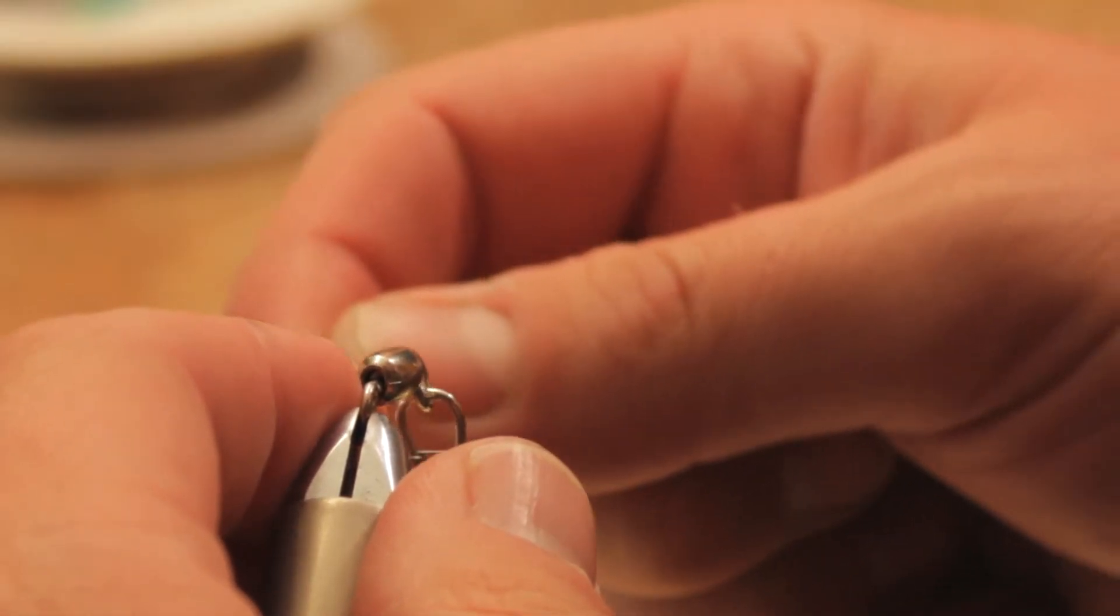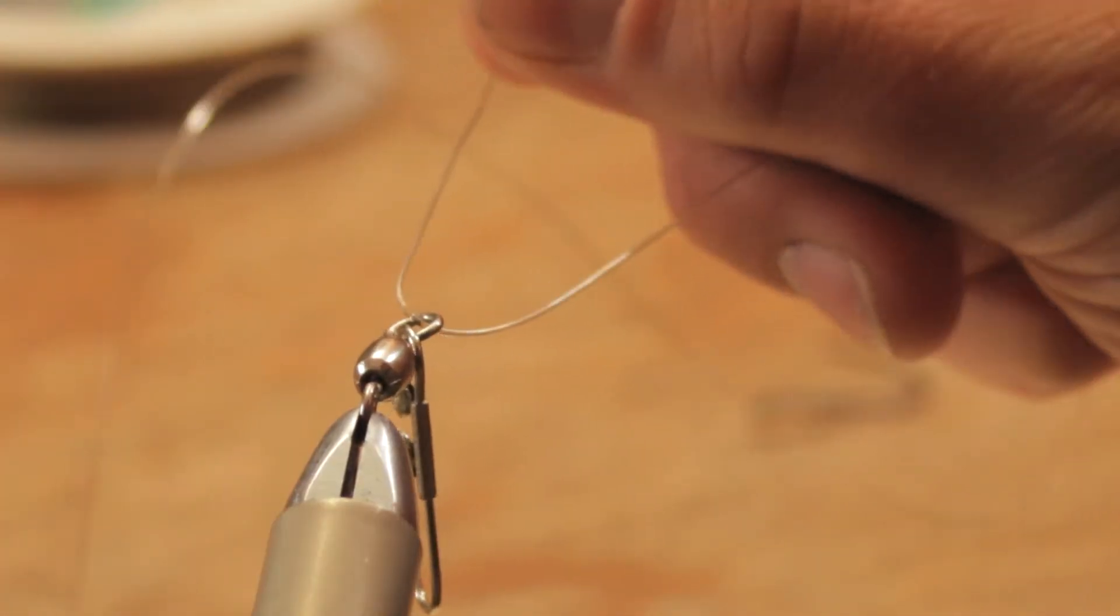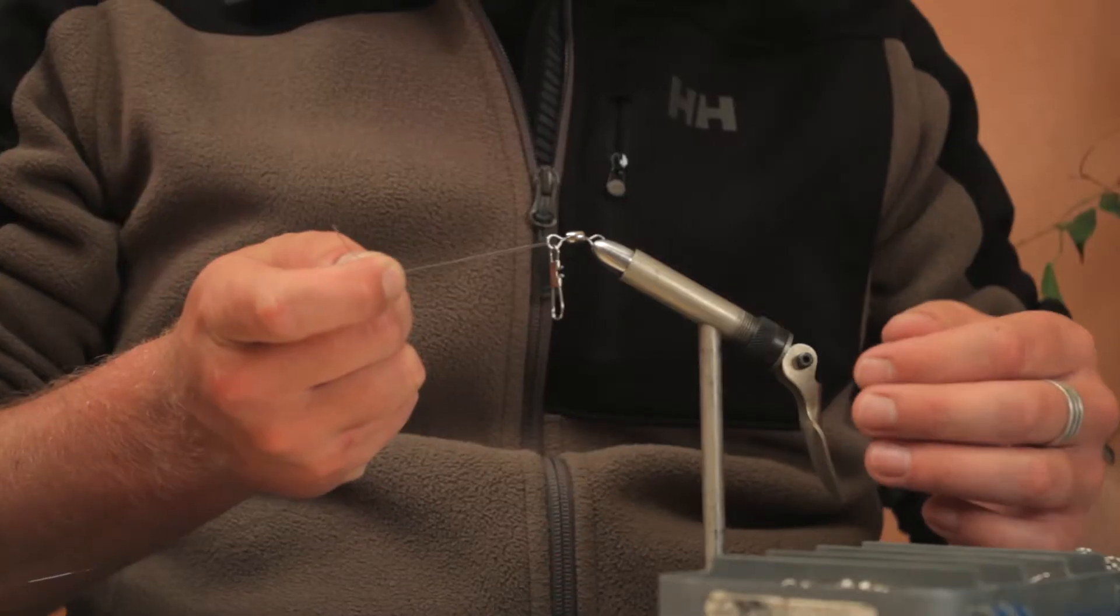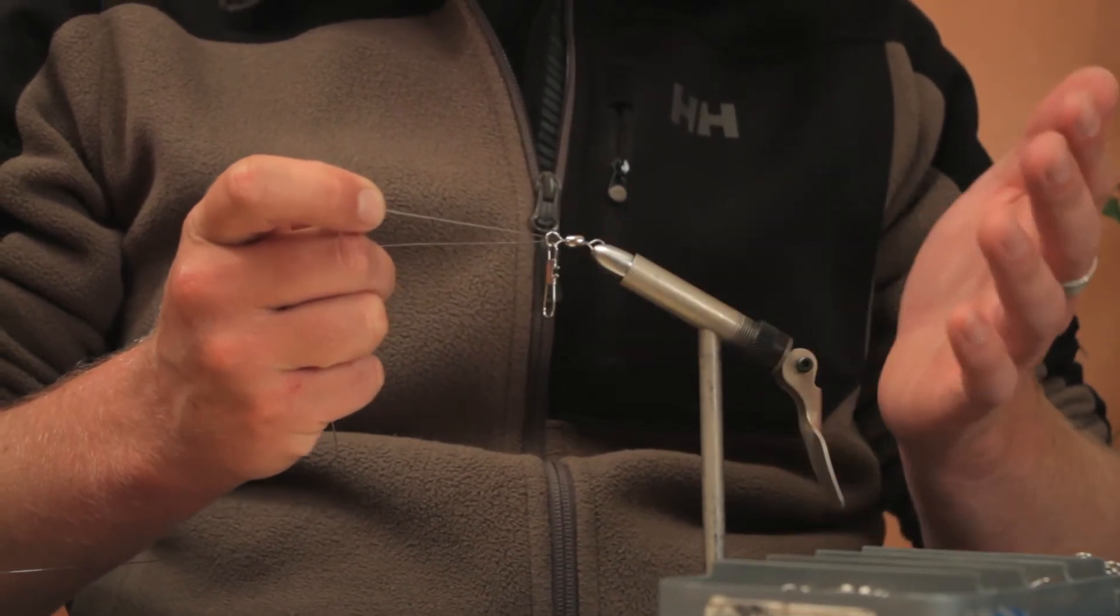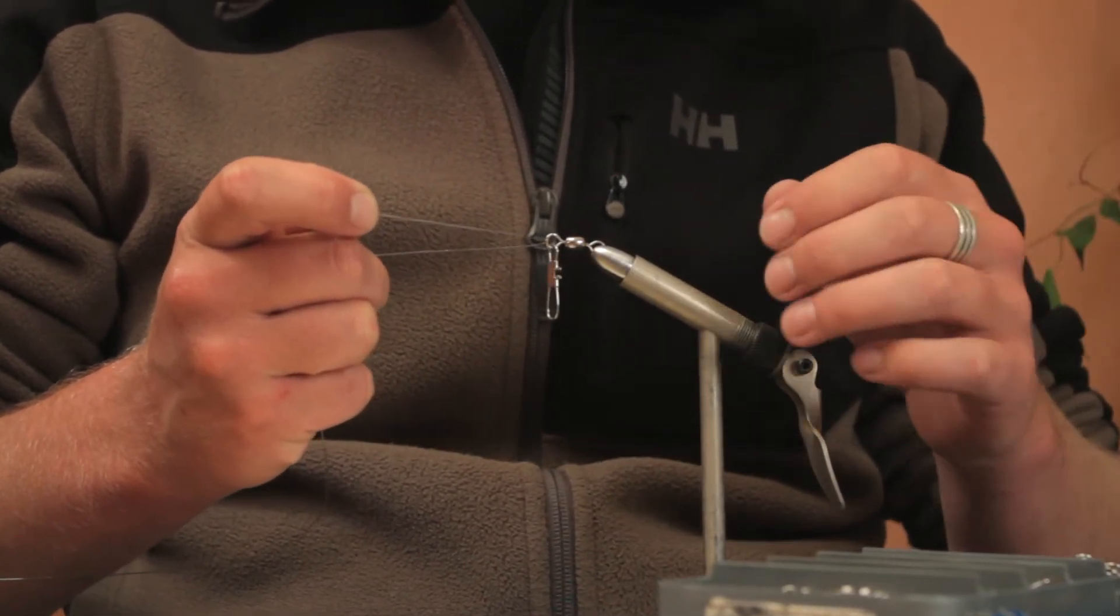We're going to take the end of our leader and put it through the eye of the swivel. So now we have a little bit of space here to work with. Normally you'd be holding this in your left hand. I'm using a vice to make it just a little bit easier.